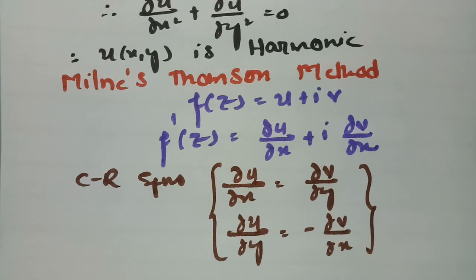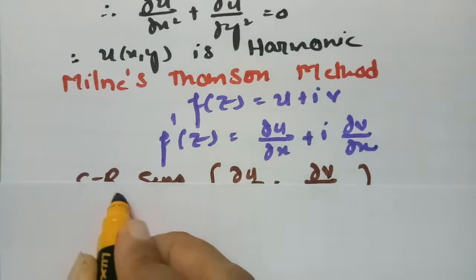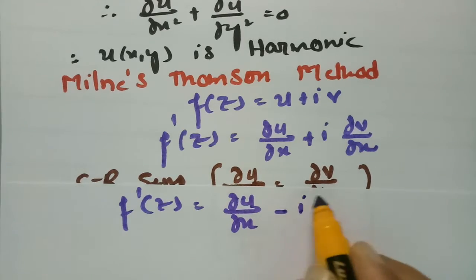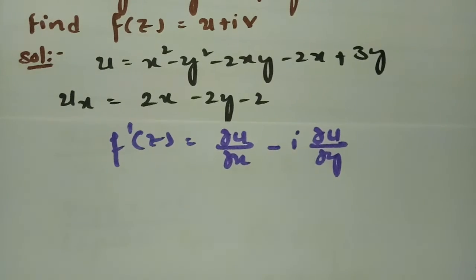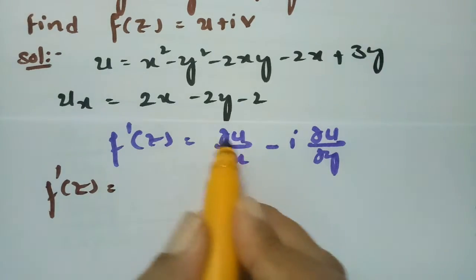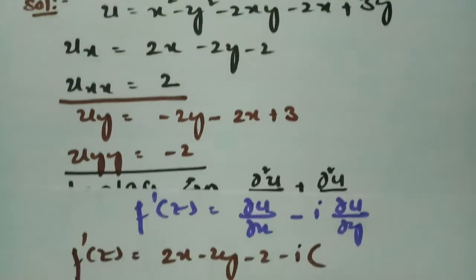Using the CR equations, I replace ∂v/∂x with -∂u/∂y, transforming v into u since only u is given. So f'(z) = ∂u/∂x + i(-∂u/∂y). The value ∂u/∂x = 2x - 2y - 2.